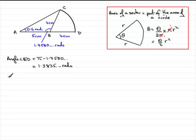So, let's start now with the area of the sector. That sector being BCD, equals half the angle here, which is 1.3835 and so on radians, times the radius squared. The radius of the sector is 4 cm, so that's times 4².